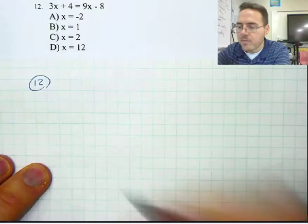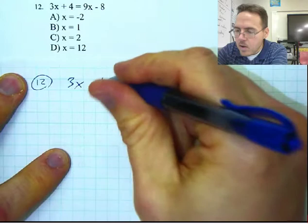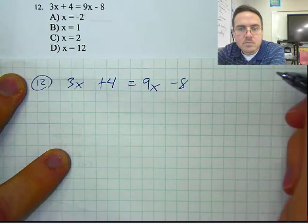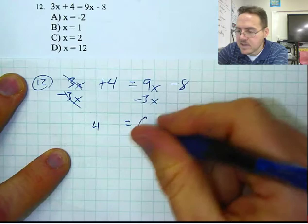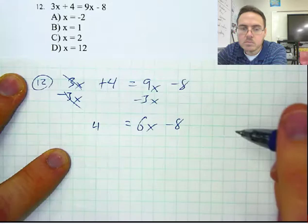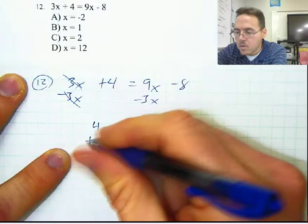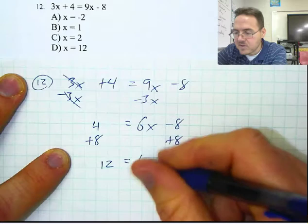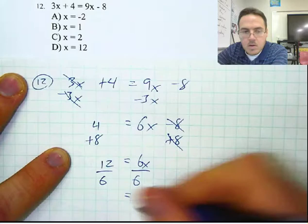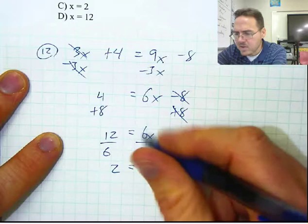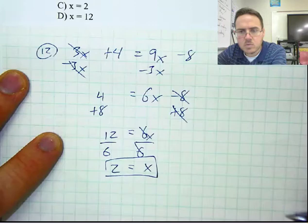Number 12: 3X plus 4 equals 9X minus 8. Let's do some undo math. Let's take away 3X from both sides to get them to eliminate, so now I have 4 equals 6X minus 8, because 9X minus 3X is 6X. Add 8 to both sides — 4 plus 8 is 12, and negative 8 plus 8 eliminates. Now divide both sides by 6: 12 divided by 6 is 2, and 6X divided by 6 is just X. X equals 2, and the answer is C.